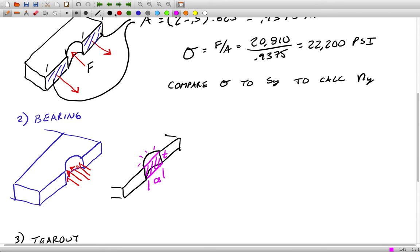All it is here is the hole diameter times the thickness. That area is just D times T. D is 0.5, T is 0.625, and we get 0.3125 inches squared.